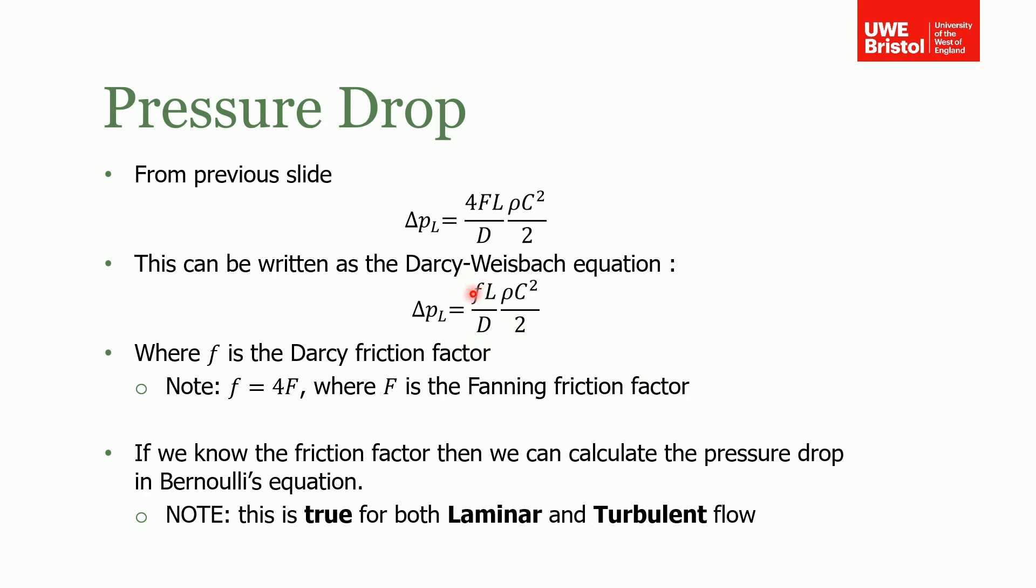This friction factor is a function of the Reynolds number and the surface roughness. Once we've got this, we can use it in Bernoulli's equation to solve whatever problem we're trying to find. One very important thing to point out is that this relationship, unlike the relationship I showed you in the last lecture for laminar flow, is true for both laminar and turbulent flow. As long as we know what our flow conditions are, we can find this friction factor and work out the pressure loss.